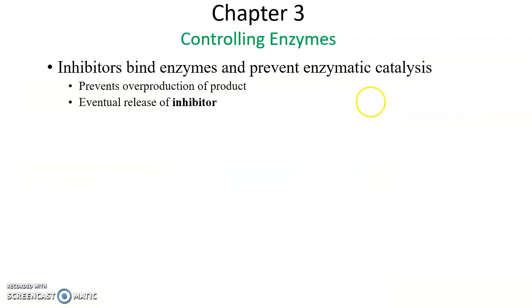Inhibitors are chemicals that can bind to enzymes to prevent the enzymes from functioning. A common inhibitor is the product. If you have an overproduction, tons of product present, this can bind to the enzyme and inhibit it because you got all the products you need. Why make more?